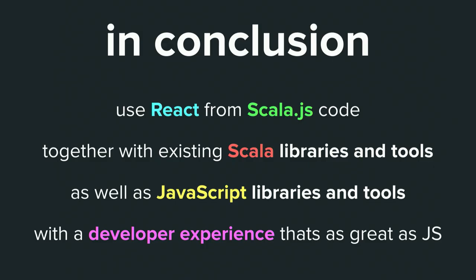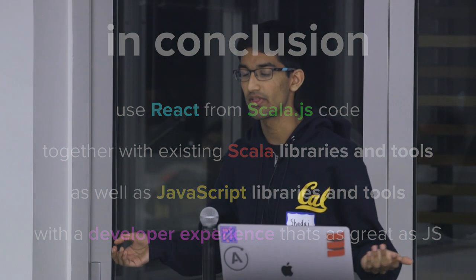In conclusion, Slinky lets you use React from Scala.js code, use Scala libraries and tools — so if you want to handle talking to your REST backend using Circe, you can do that with your existing Scala knowledge. You can also use JavaScript libraries and tools — existing JavaScript packages, Webpack plugins for importing and optimizing SVGs — integrating into your build pipeline. And you get a developer experience as great as JavaScript through hot reloading and build tools that work together.